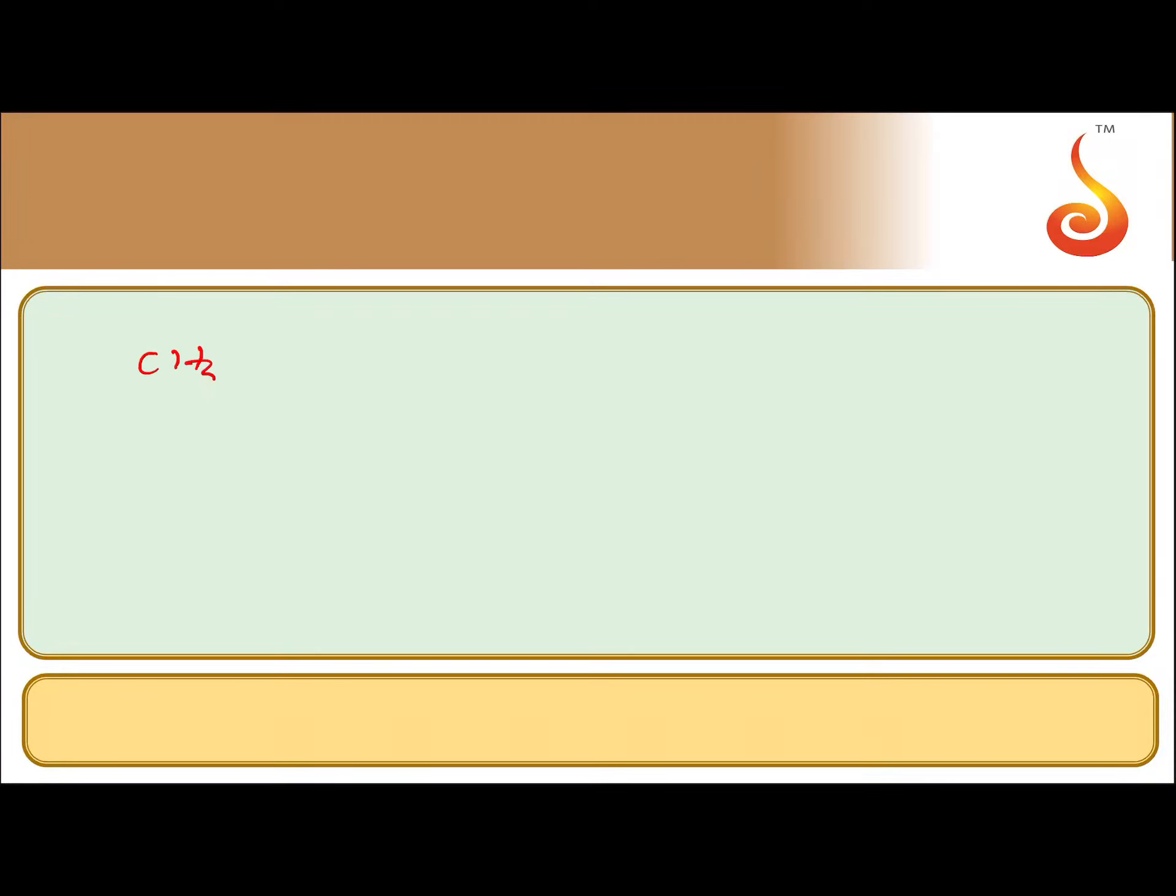When acetic acid is treated with the first option, PCl5, the OH group will be replaced by Cl.